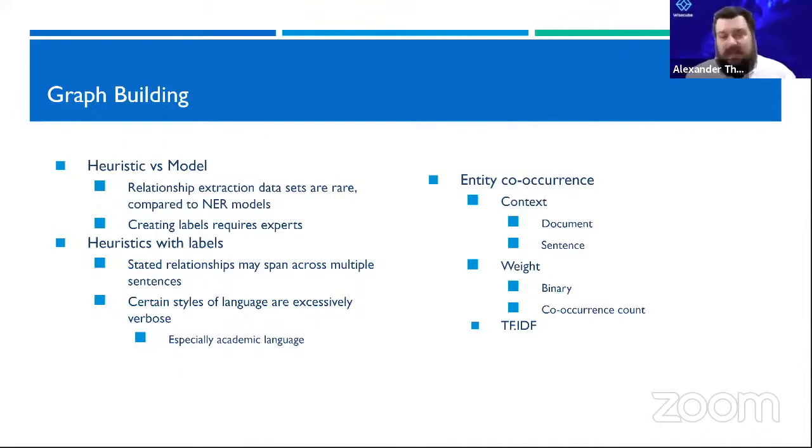There's also how you want to weight them. You could not weight them. You could just look at the binary of whether they're in a certain number of documents. You could look at the count, but the problem with count is that words have different numbers of occurrences. You'll end up having all your most popular terms highly connected to each other, which is not going to be very helpful.